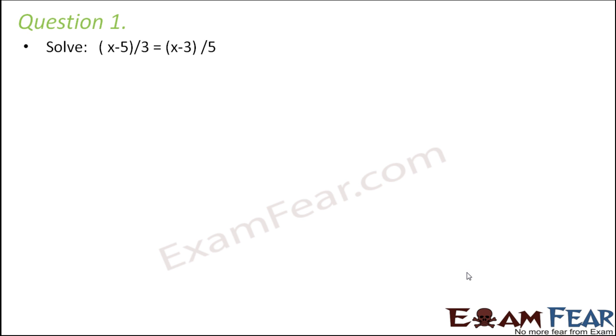So let's look at question number 1. Solve (x-5)/3 = (x-3)/5. So this equation belongs to which form? Type 1 or type 2? So which tip are we going to apply? Tip 1 or tip 2?